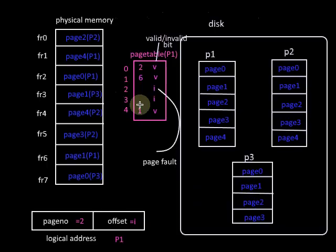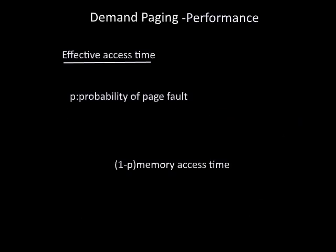Now let's see what is the performance of a demand paging system — specifically, the effective access time using demand paging. Let p be the probability of a page fault. If there is no page fault, the time required is only the main memory access time. So for probability (1-p), the time taken is just the memory access time.